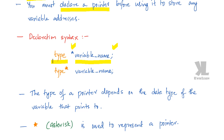First we have to write the data type of that variable, then the asterisk symbol, then we specify the variable name. This is the first way. Or otherwise we can write it like this: type, star, then after a space we specify the variable name, then a semicolon. This is the second way we can declare a pointer.